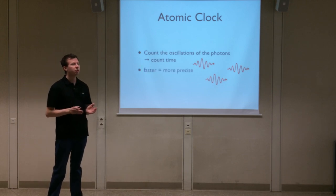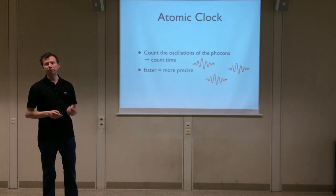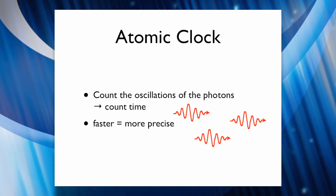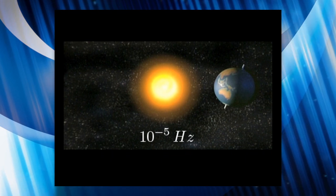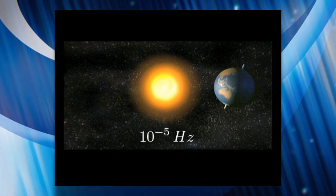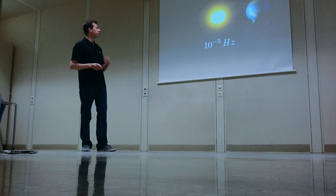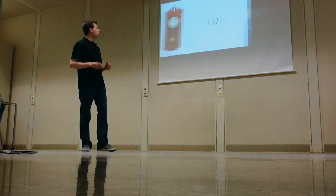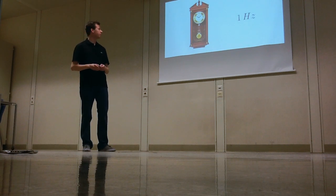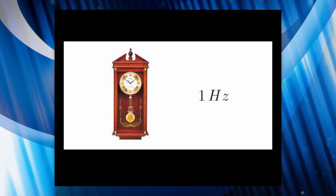Obviously and quite intuitively, the faster these oscillations are, the more precisely you can count time. It has always been in mankind's interest to count time, and I have compiled a list of how we have been able to do this over the last 3,000 years. The least precise is just looking at the sun as it rises and sets — basically one day, roughly 85,000 seconds — amounting to a frequency of 10 to the minus 5 Hz. Next, already a little more precise, is a pendulum clock, where the frequency is determined by the length of the pendulum, taking about one second for a full swing, amounting to roughly 1 Hz.